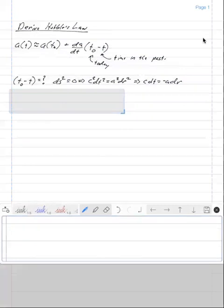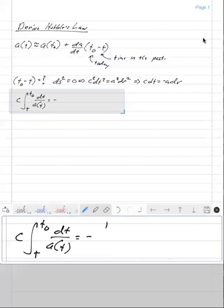Just as when we derived the cosmological redshift, we're going to move everything that depends upon time on the left-hand side. So c times the integral from t to t naught dt over a of t.